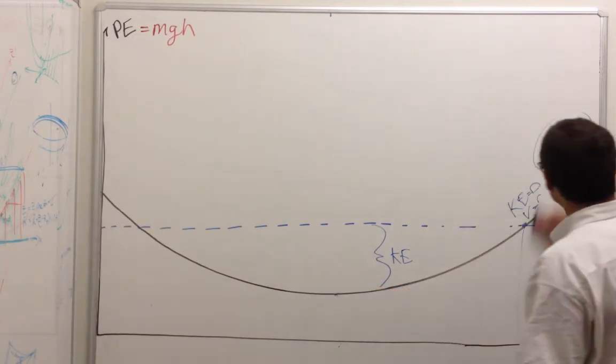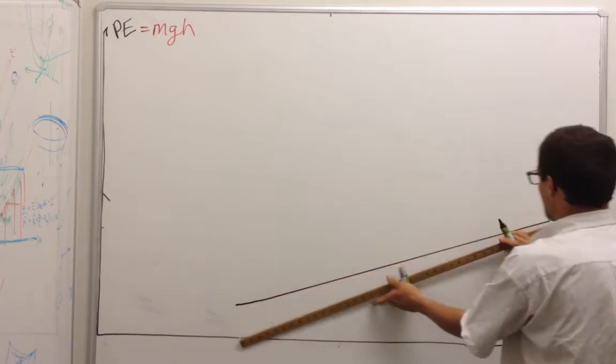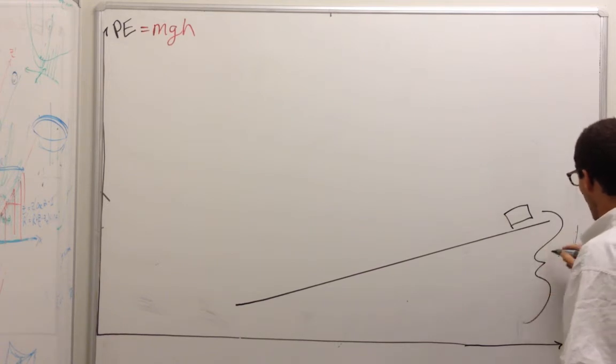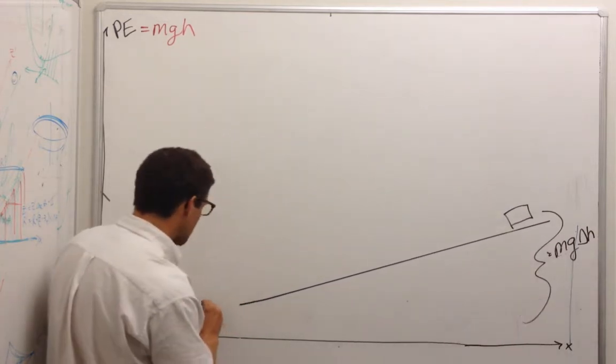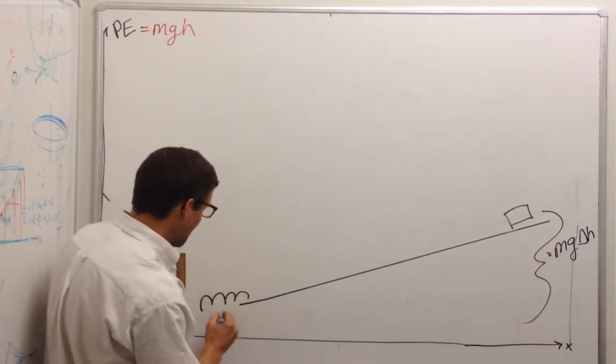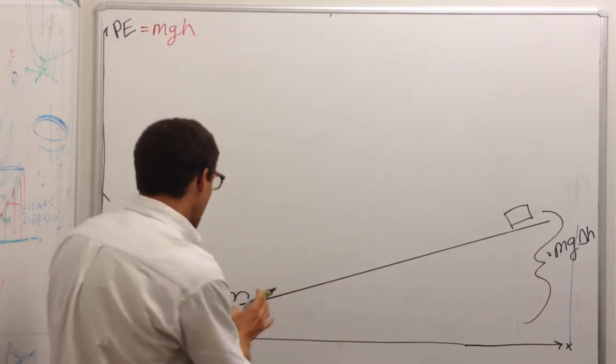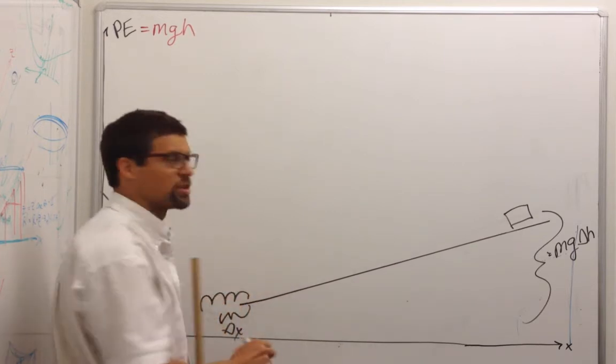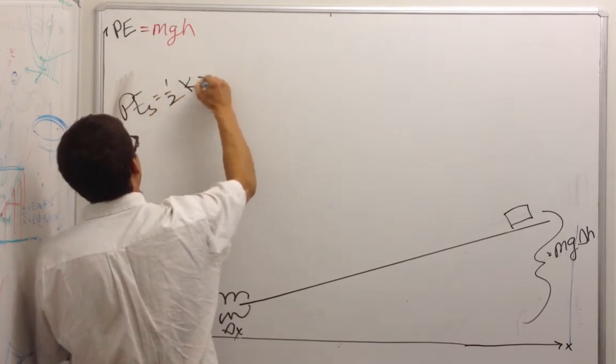Potentials don't always have to be gravitational. What if we had a cart on an inclined track? Then we recognize that the potential energy of the cart would be equal to mg delta H. This is a gravitational potential, but what if on this side there was a spring? And we had some delta X right here, and we'd see that the potential energy of the cart would get much greater as we compress the spring. The potential energy of a spring is equal to one-half K X squared.